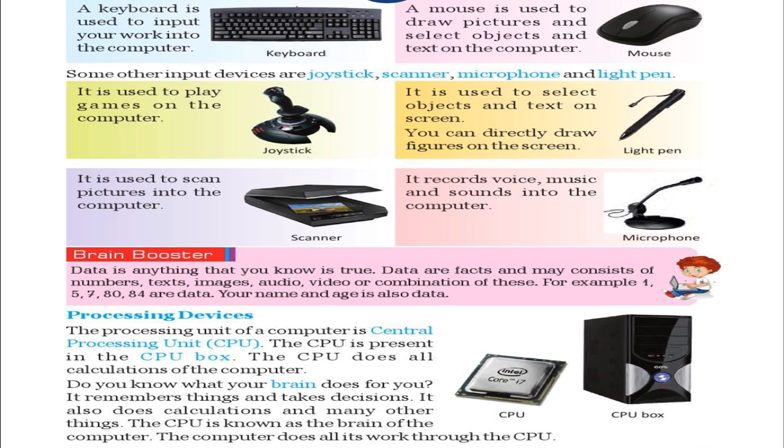Do you know what your brain does for you? It remembers things and takes decisions. It also does calculations and many other things. The CPU is known as the brain of the computer. The computer does all its work through the CPU.